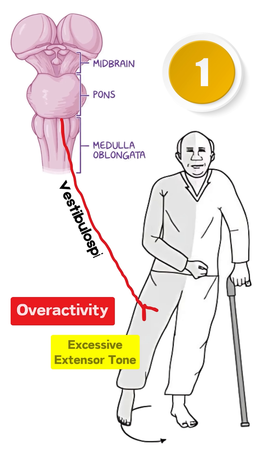The first reason is the overactivity of the vestibulospinal tract, which leads to extensor synergy pattern in the paretic lower limb, as discussed in our previous video.